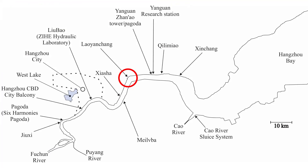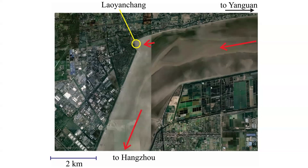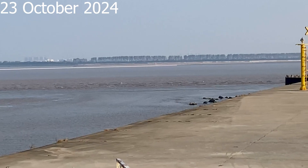The tidal bore of the Qiantang River is a massive process that initiates in the Hangzhou Bay, and will propagate over 100 kilometers past the city of Hangzhou and into the Fuchun and Puyang Rivers. At Laoyanchan, the bore is subjected to a fairly sharp turn to the left as it propagates upstream, with fairly major reflection in the outer bend of the river, where an embankment dam structure has been built to protect the river bank.